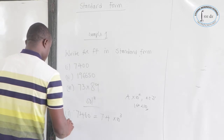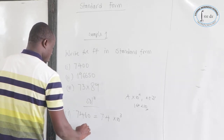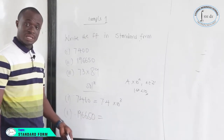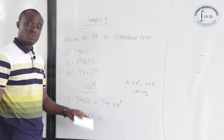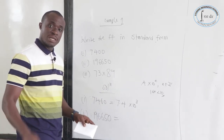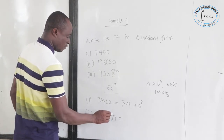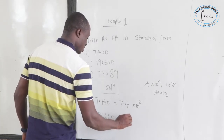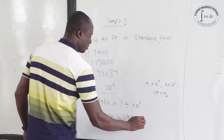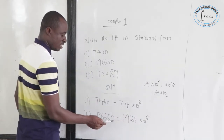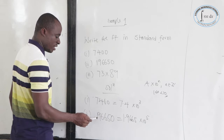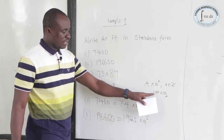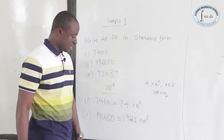Now let's see the second one: 19,665.0. This is a whole number greater than 10, so we need to put A between 1 and 10. Moving the point: 1, 2, 3, 4, 5 — we get 1.9665 times 10 to the power 5. Why 5? Because we moved 5 times. And 1.9665 is greater than or equal to 1 and less than 10, so this is in the correct range.